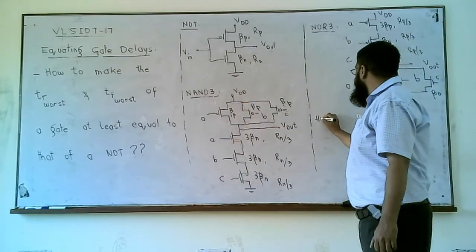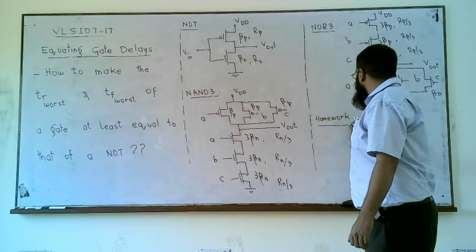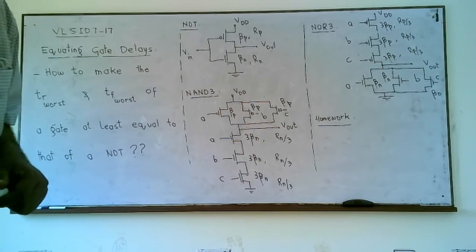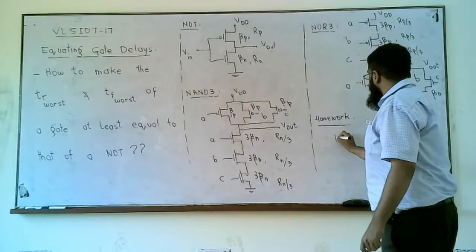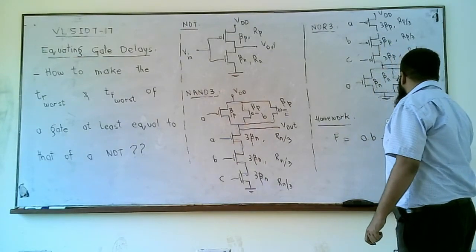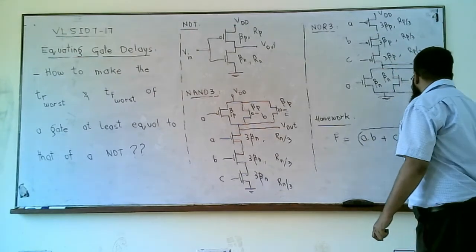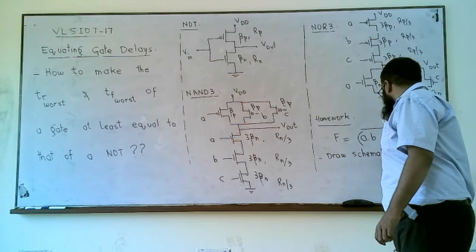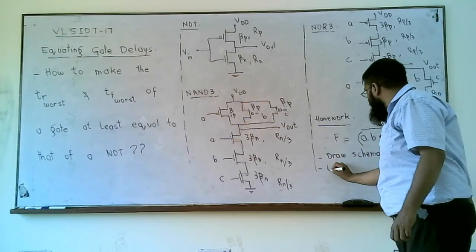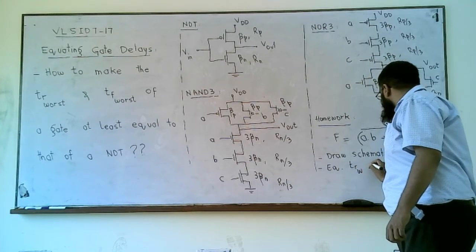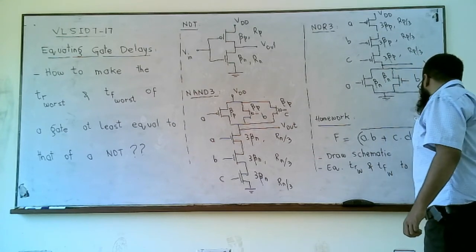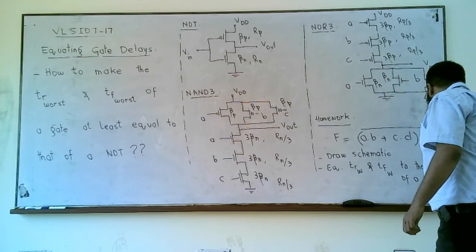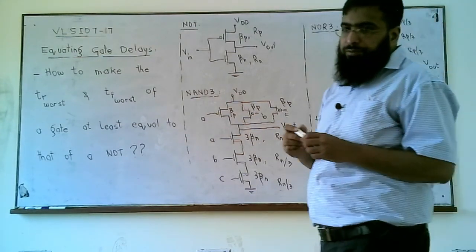You can extend this approach for any circuit you want. There is a small homework: a function f is given as f = (a·b + c·d)·x. Draw a schematic for this Boolean expression and then equate the worst case rise time delay (dr) and worst case fall time delay (df) to those of a NOT gate. That is all for this lecture. Thank you.